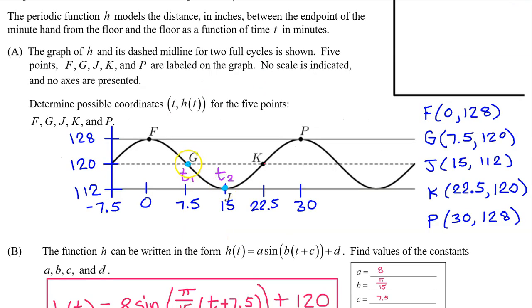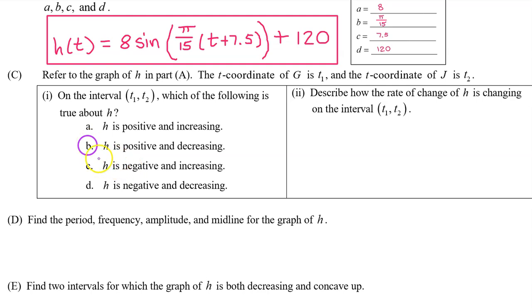First of all, is h positive or negative on this interval? Well, look at these output values. The output values are between 112 and 120, so they are certainly positive. We can easily see that h(t) is decreasing from t₁ to t₂ because we can see how the output values are falling from left to right on this interval. So, h(t) is positive and decreasing on this interval. So the answer is b.